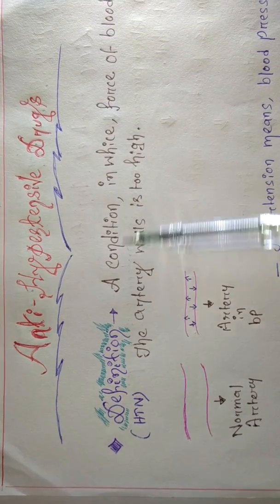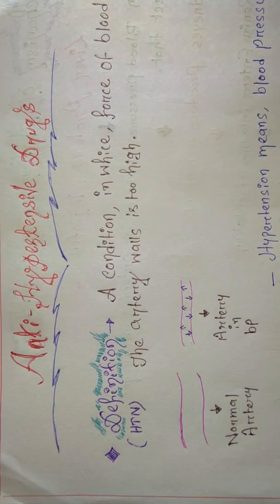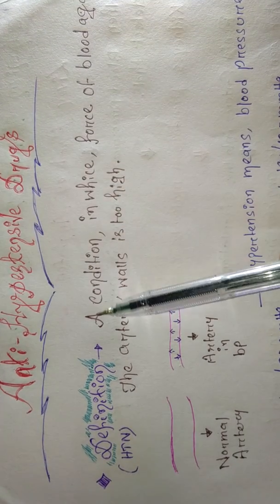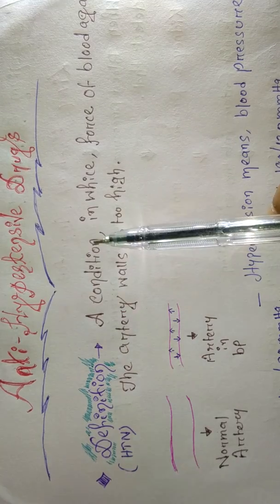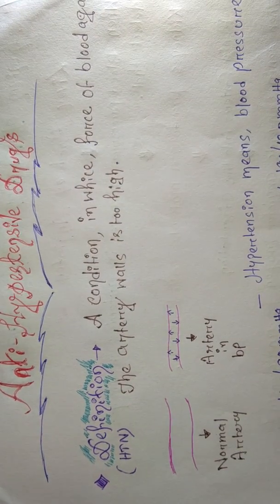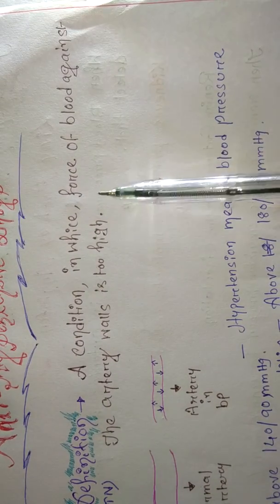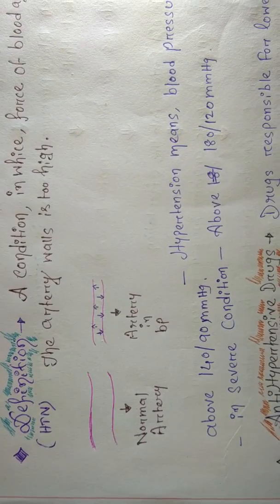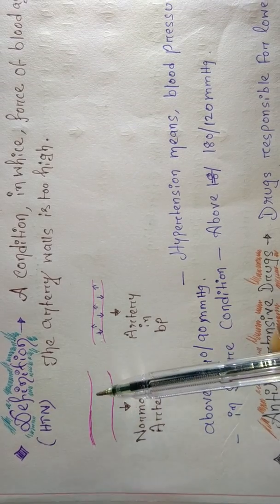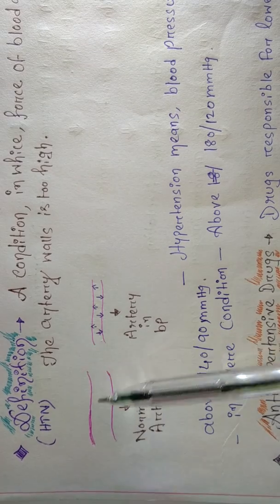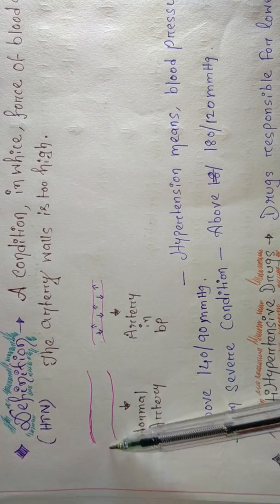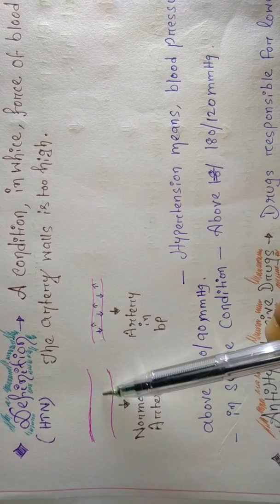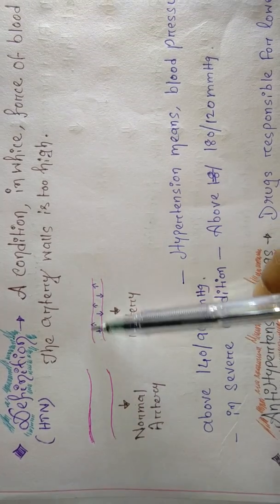What is hypertension? Hypertension is high blood pressure — in one word. In one sentence: hypertension is a condition in which the force of blood against the artery wall is too high. This is the artery of a normal person — the artery has enough space so that blood can flow without any problem. In a hypertensive patient, the artery becomes narrow.